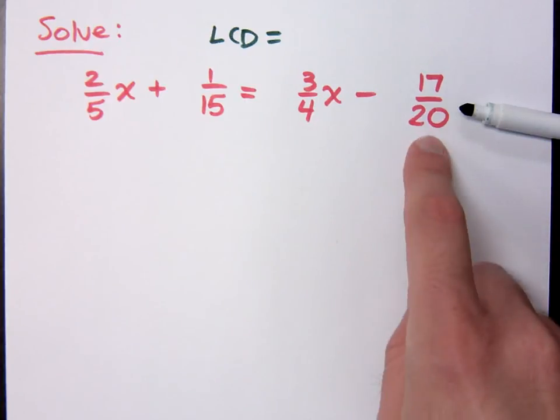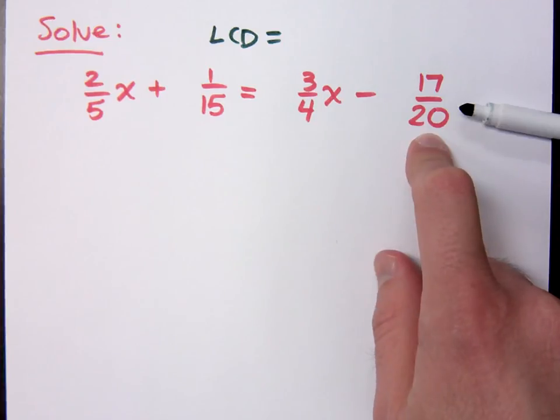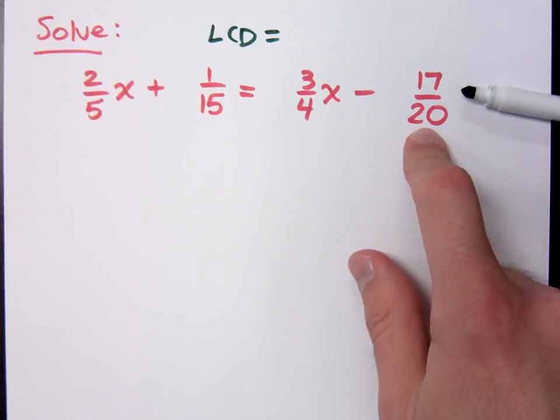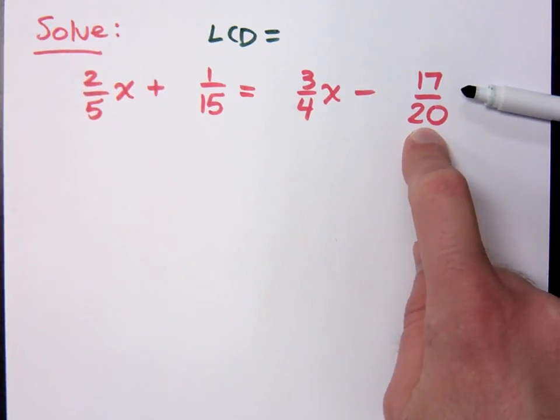Now, does 4 go into 20 evenly? Yeah. So, 4 and 20, the LCD would be 20. But does 15 go into 20? No. Not evenly. So you need to go through your multiples of 20.